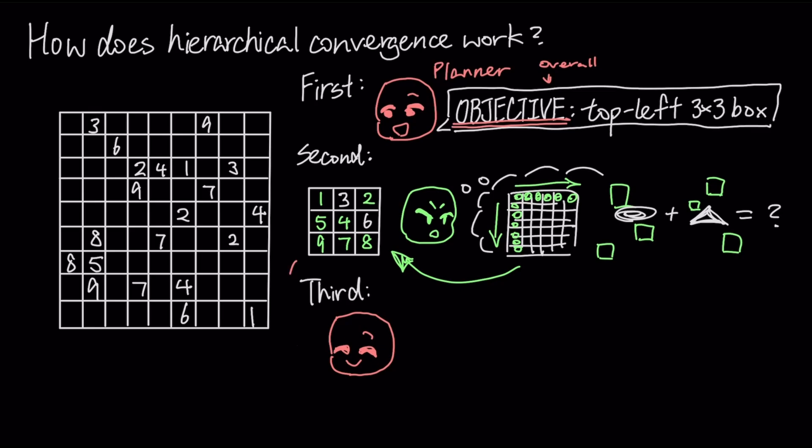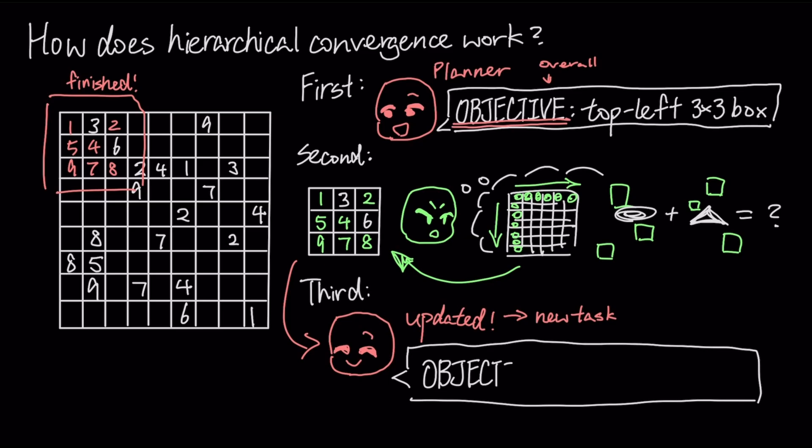Once finished, its result is sent back to the high-level module, which updates the overall puzzle strategy and issues a new subtask, like based on that, now focus on the top middle box.